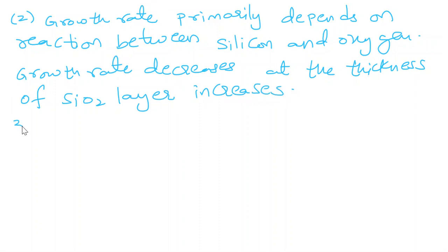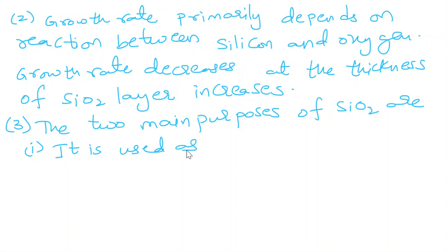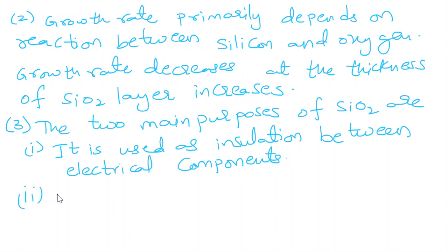So the two main purposes of SiO2. SiO2 layer is used as, the first one is used as insulation between electrical components. Secondly, used as a diffusion, dopant diffusion barrier.